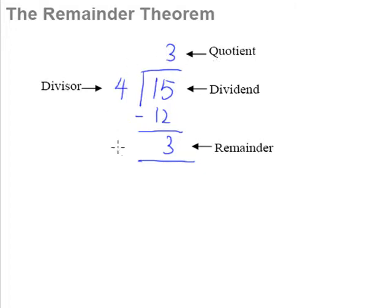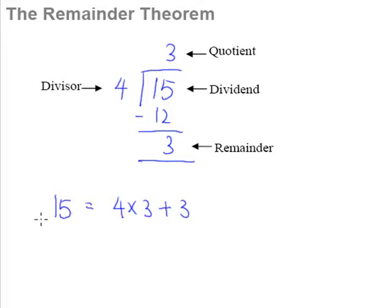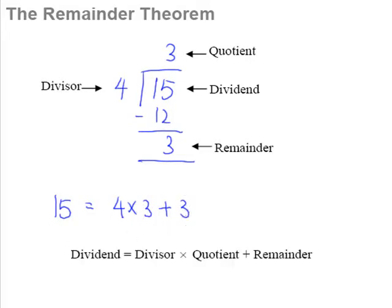Now, when you study this long division closely, you realize that there is a relationship linking all these items together — linking the quotient, the divisor, the dividend, and the remainder together. Just what is the relationship? Well, we should figure out that 15 is actually 4 multiplied by 3 plus 3. This 15 is our dividend, this 4 is the divisor, the 3 here is the quotient, and the 3 here is the remainder. In short, what we realize is that the dividend is equal to the divisor multiplied by the quotient plus the remainder.